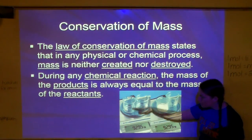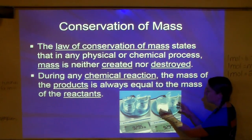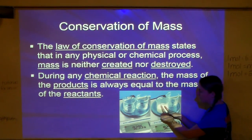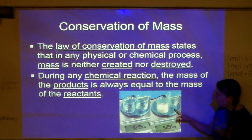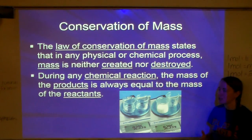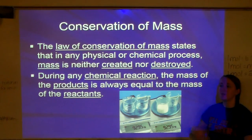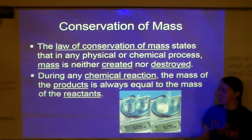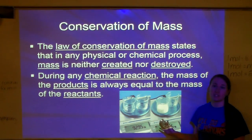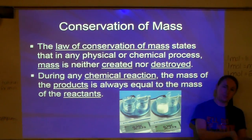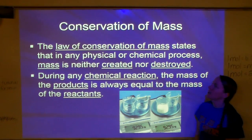This picture shows two beakers each with a clear liquid — total mass 92.95. When they mixed the two beakers, one became white, forming a precipitate. But the mass is still 92.95. The mass does not change — it's impossible to lose or gain mass in a reaction. Mass of reactants always equals mass of products. If I start with 50 grams, I have to end with 50 grams.